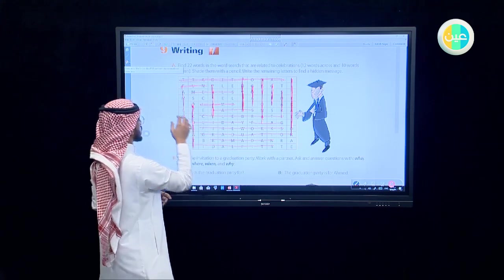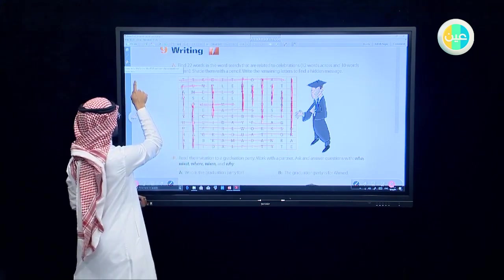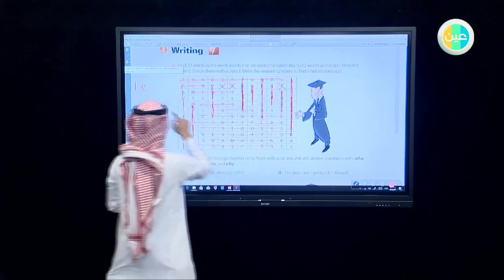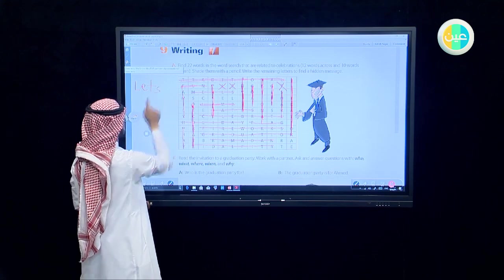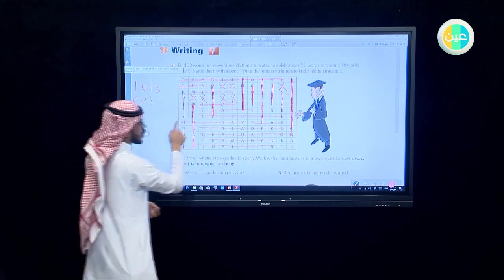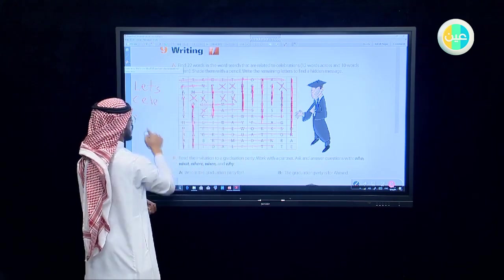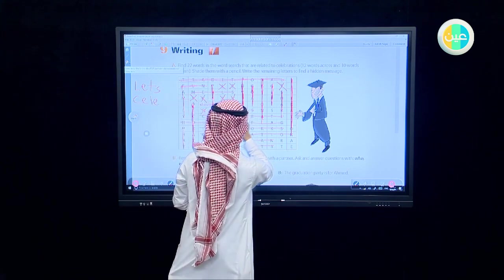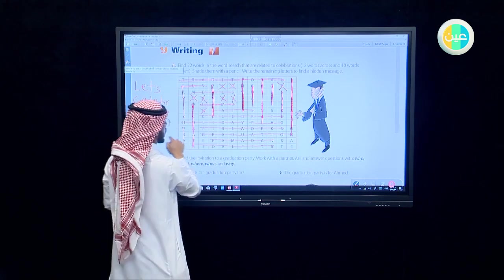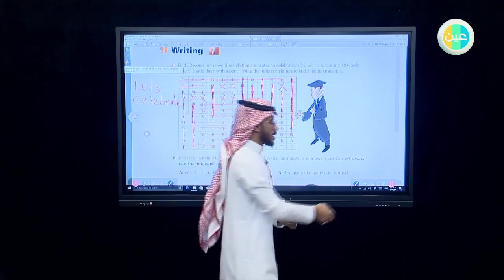Let's see what is the word with the remaining letters. We have the first one is L, the second one is E, third one T, S, C, E, L, E, B, R, A, T, E. So the hidden message is let's celebrate.